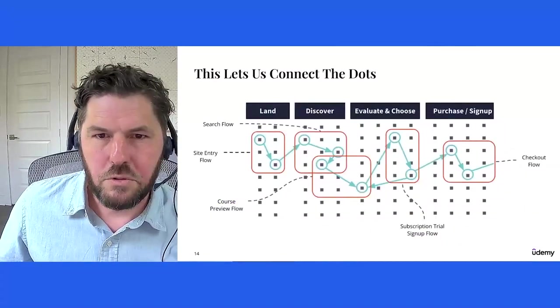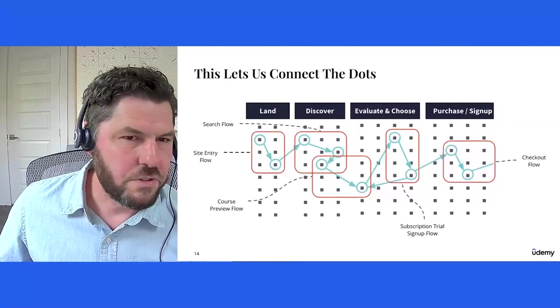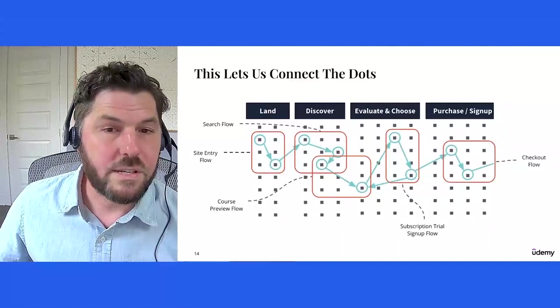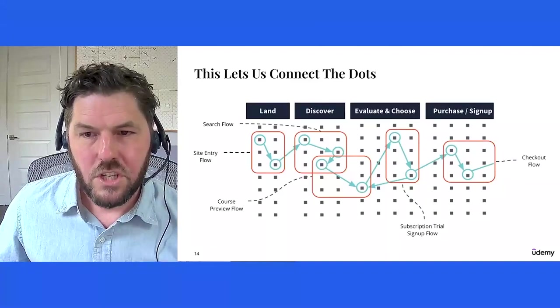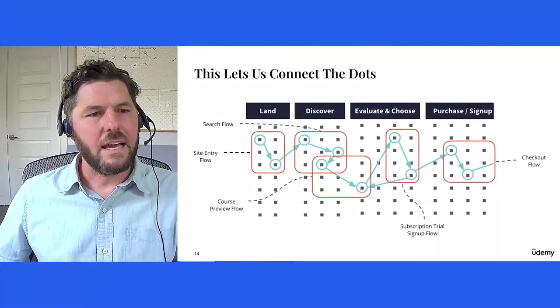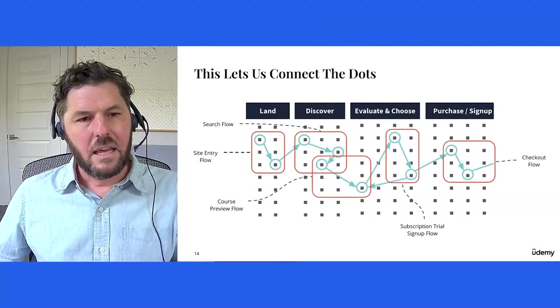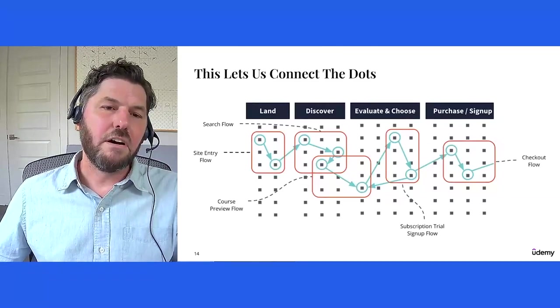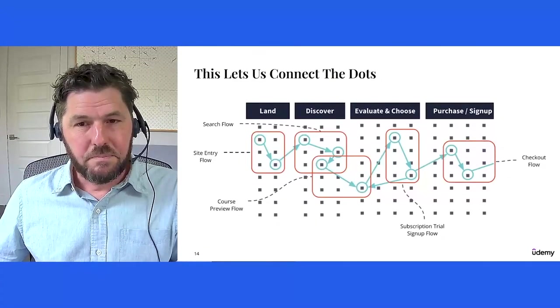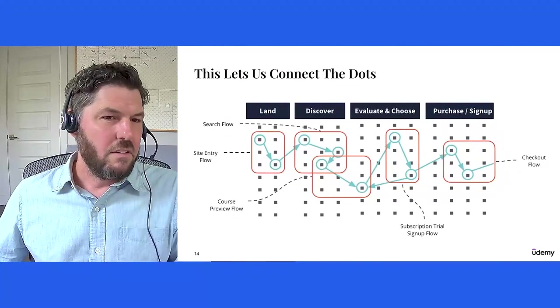So more visually, let's look at a little visual representation of how this looks. Again, we have these different customer journey phases, landing, discovering, evaluate and choose, purchase and sign up for a learner. And you could look at all of these different dots as representing possible user interactions or system reactions. These are events. And let's assume that this sequence of highlighted events captures and describes my personal journey on Udemy. So I enter the site, go through a flow for site entry. I go through a search flow to discover what's available. I get into a course preview flow that helps me start to evaluate and choose whether or not I want to engage. And then perhaps I get into a subscription trial signup flow, followed by a checkout flow to start my subscription and get access to that course.